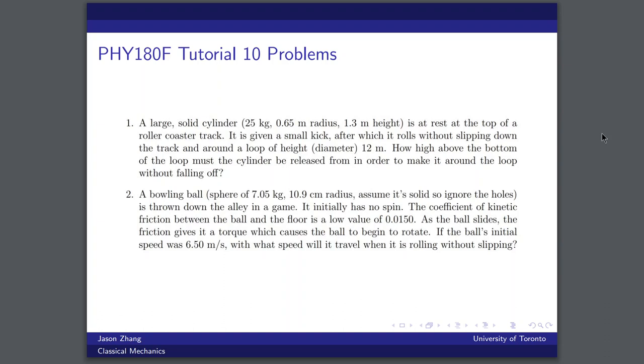In our second question, we have a problem on rotational kinematics. So we have a bowling ball that's thrown down an alley. Initially it doesn't have any rotation to it, but the coefficient of kinetic friction between the ball and the floor causes a torque, a net torque to be applied to the ball, which eventually causes it to rotate. Eventually it will get to a point where it will be rotating but it won't be slipping against the floor, and so it is a rolling motion problem, and we need to find the speed at which the bowling ball is traveling given its initial speed.